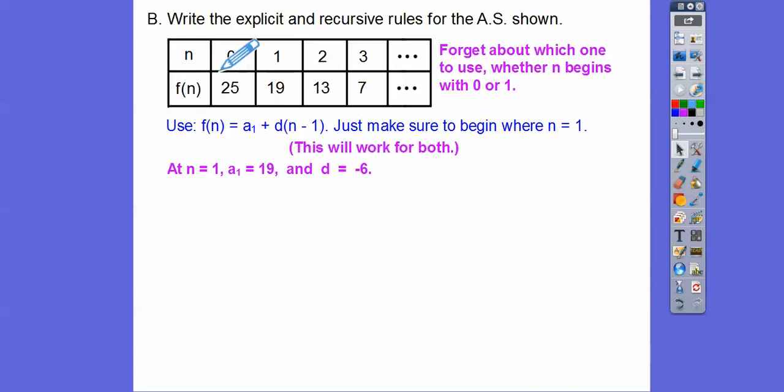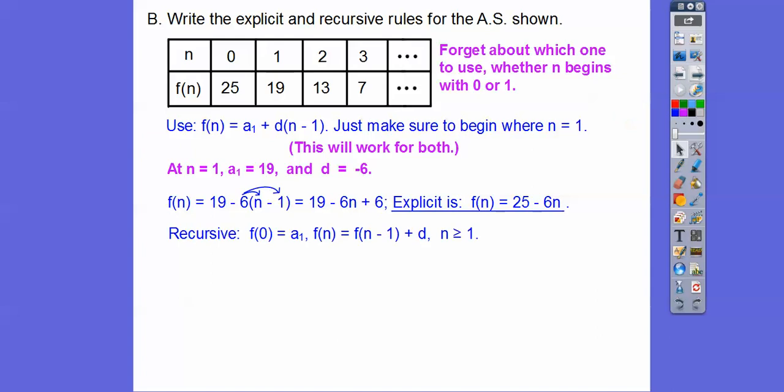I'm going to plug in A sub one equals 19 and D equals negative six. Can you see those terms are going down? Minus six, minus six. 25 minus six is 19 minus six is 13 minus six and so on. So that's D right there. Let's plug that in, distribute the six through, and then combine the 19 and the six gets us that 25.